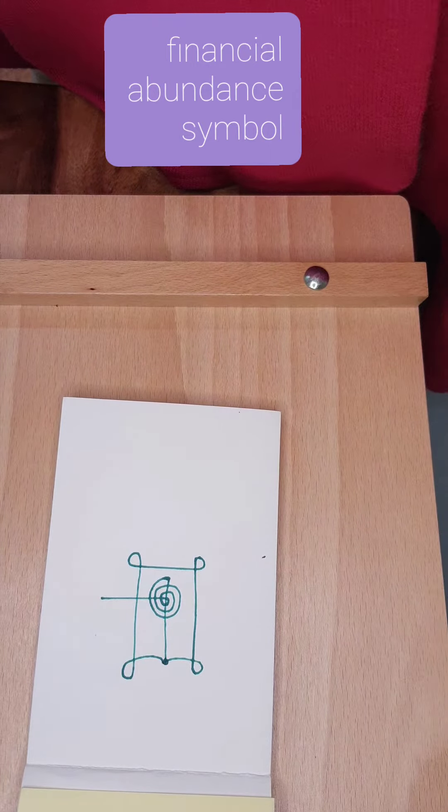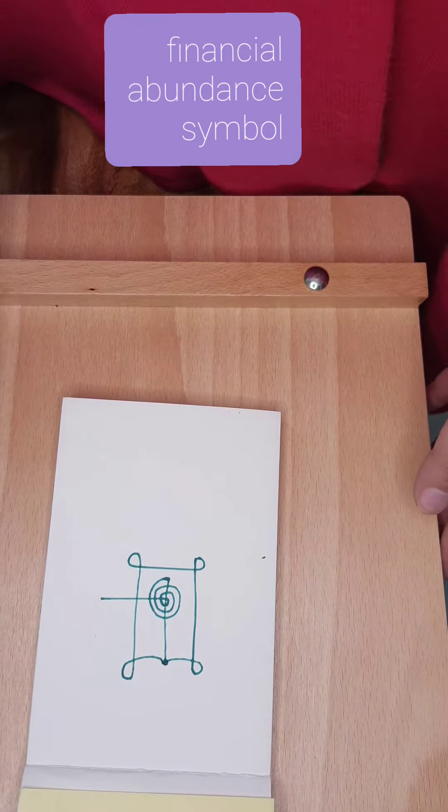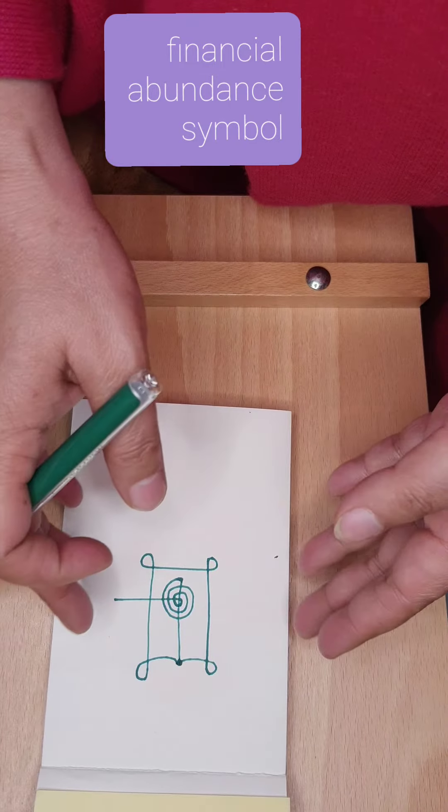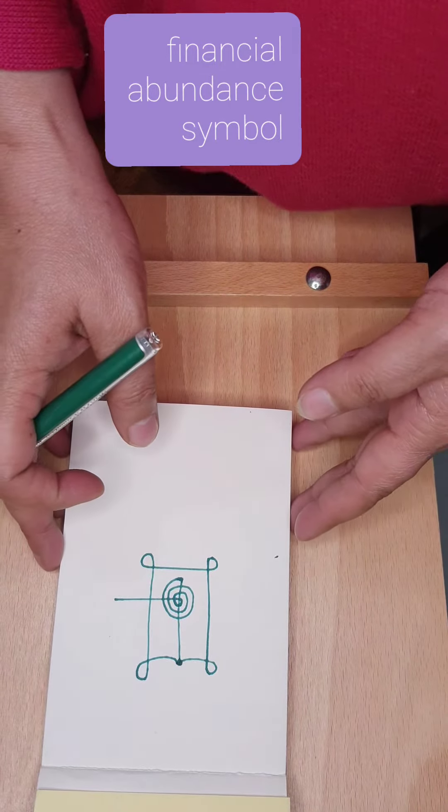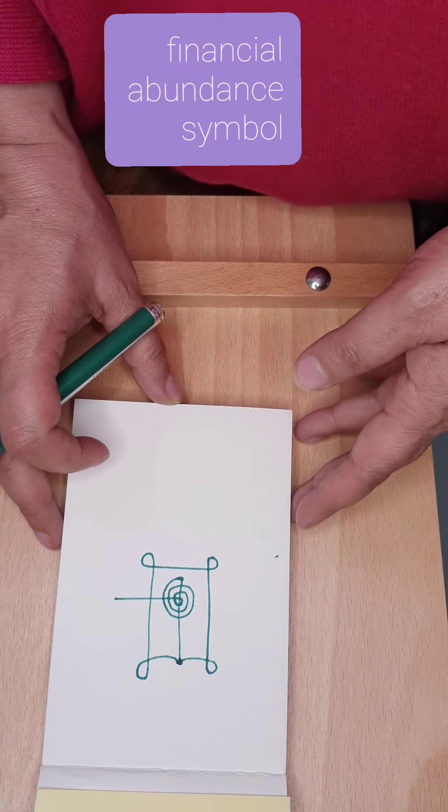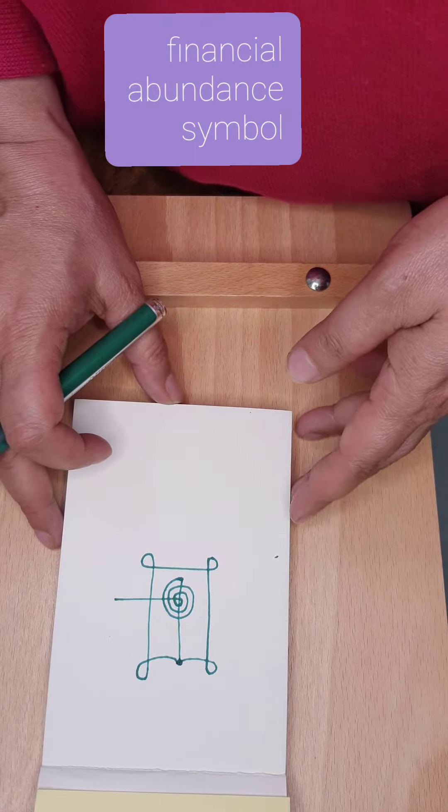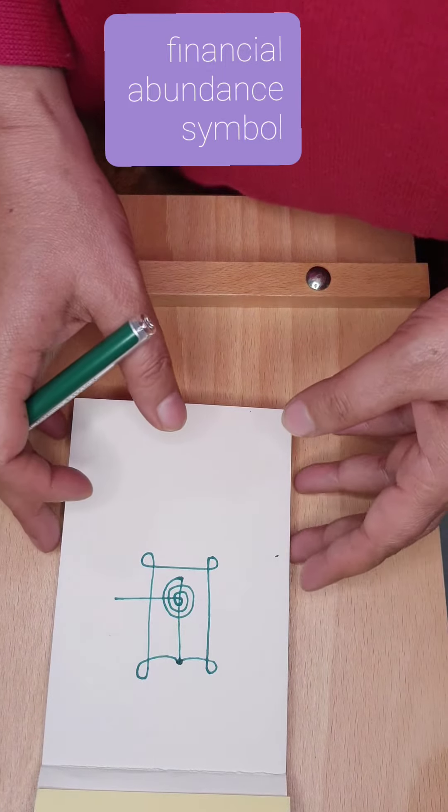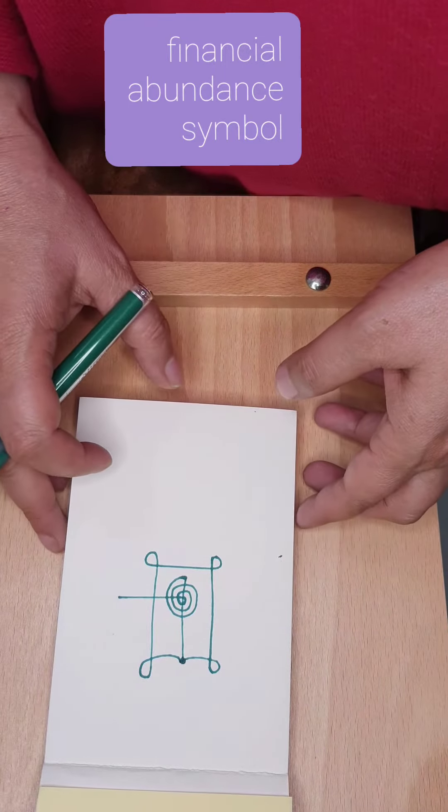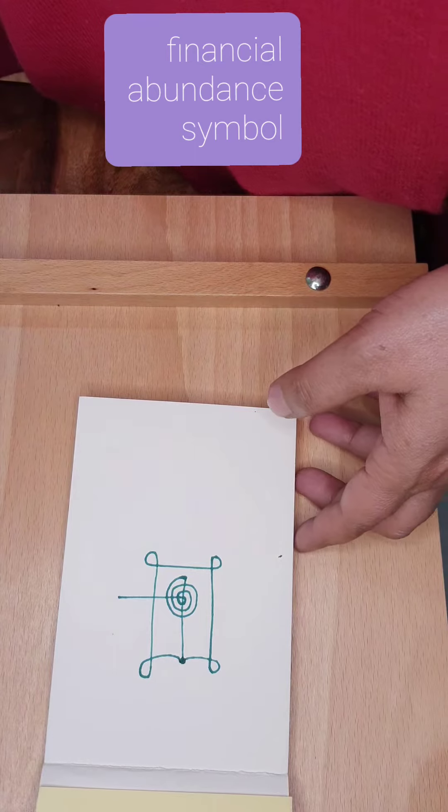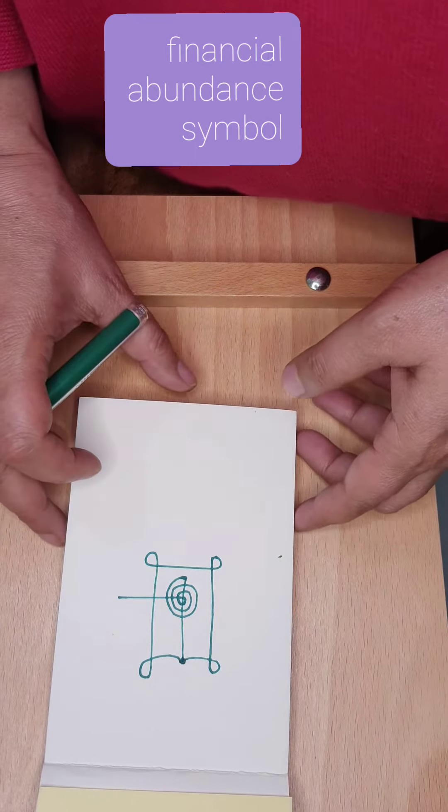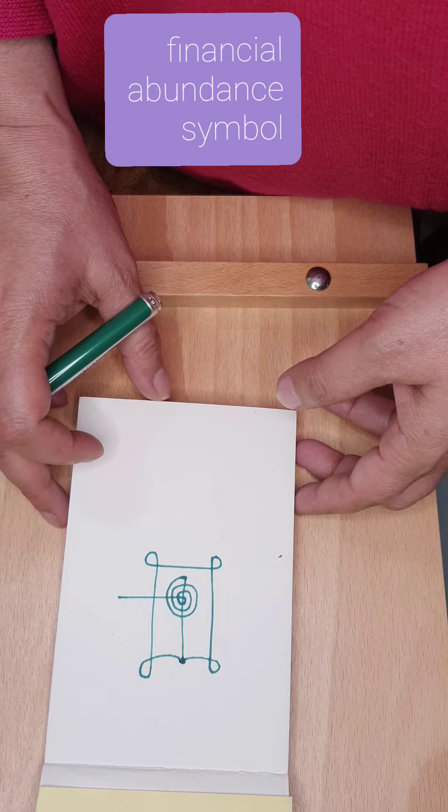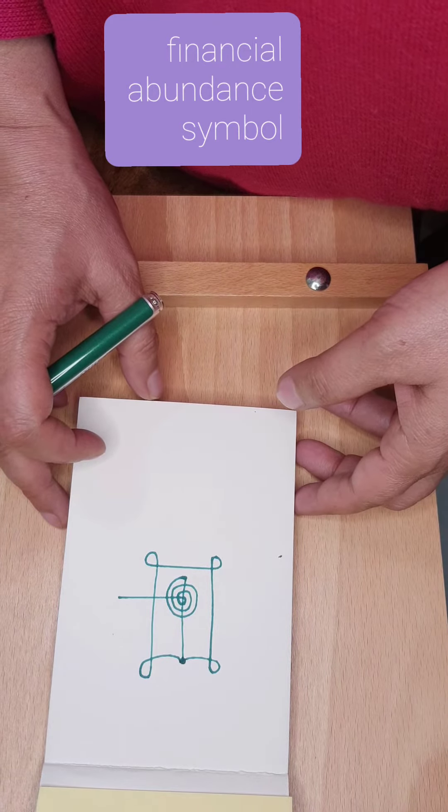There are certain norms to be followed. The time you have to draw the symbol is before sunrise every day for 21 days. You have to say the lines which I'm saying right now. In the first time when you're doing it, say: I thank the universal energy for guiding me, I thank Japwa symbols for helping me.